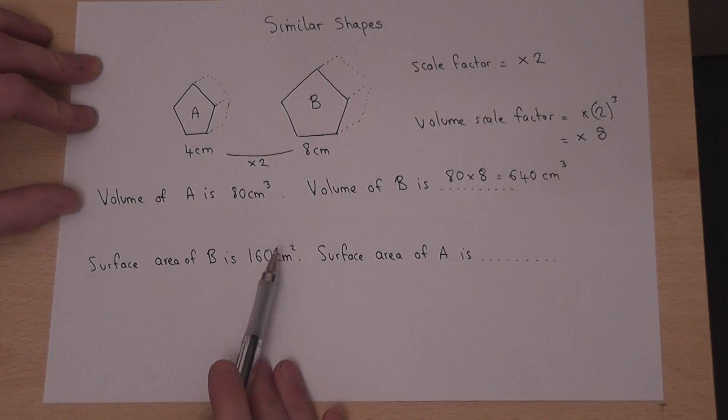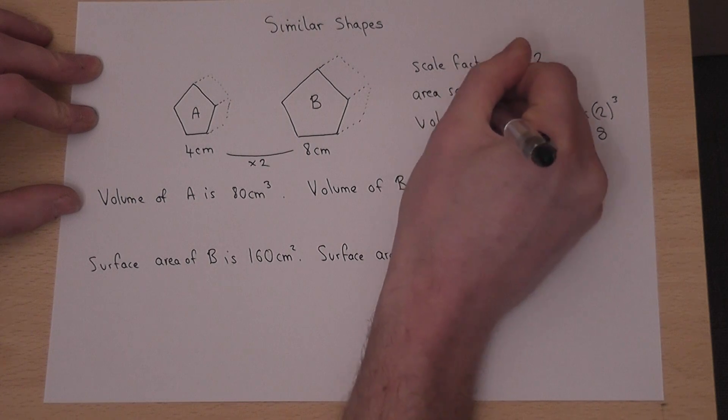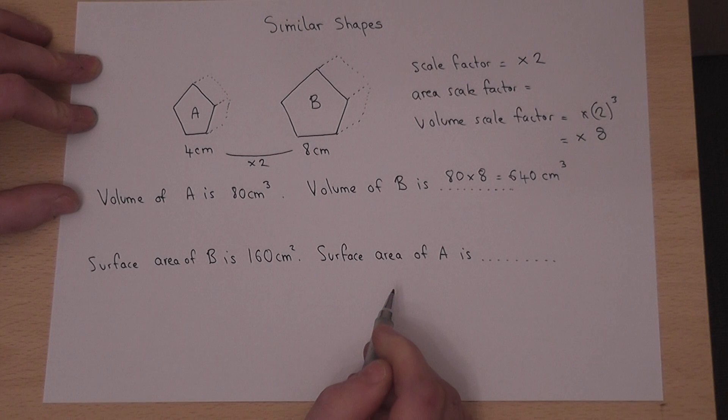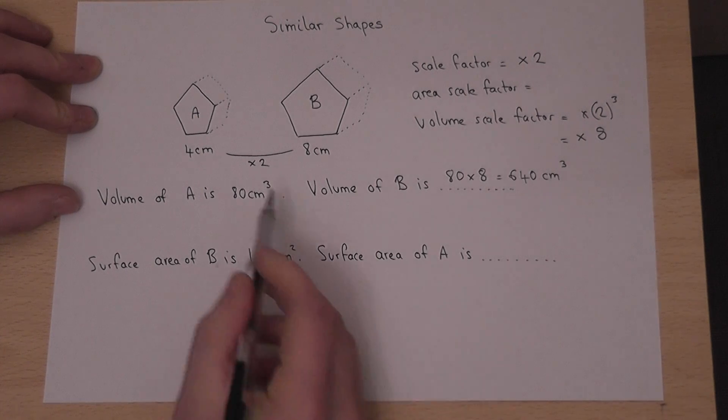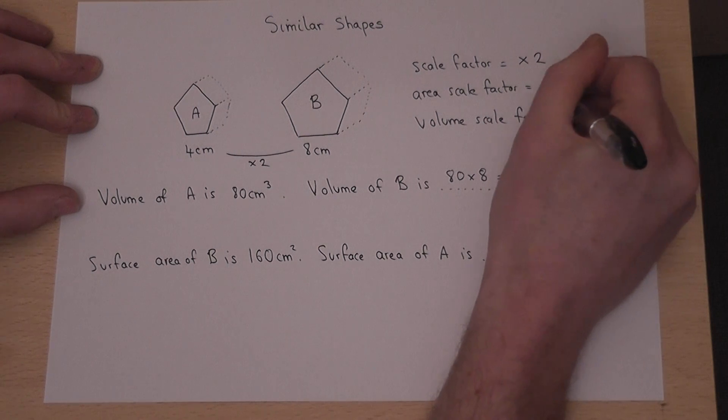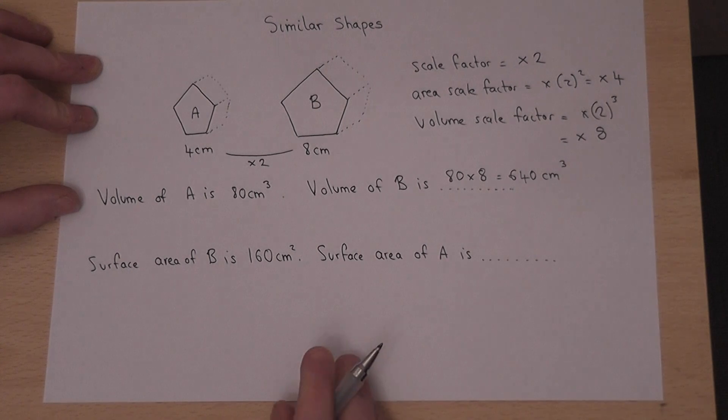Now there's a similar area scale factor which follows the same rule as before. But this time rather than times by 2 cubed, it's 2 squared. So the area scale factor is times by 4.